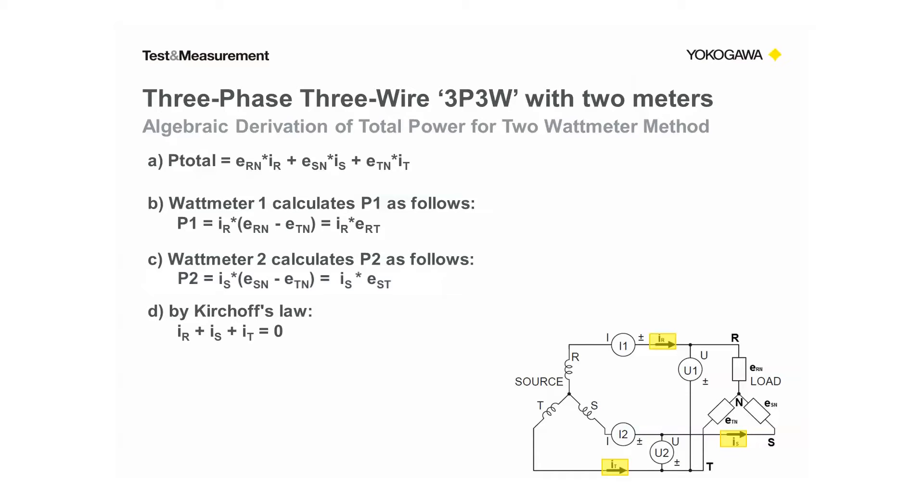Equation D by Kirchhoff's law, the sum of the three phase currents equals zero. The neutral wire is non-existent.